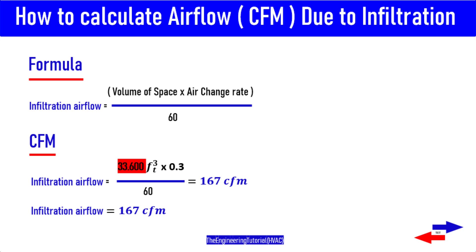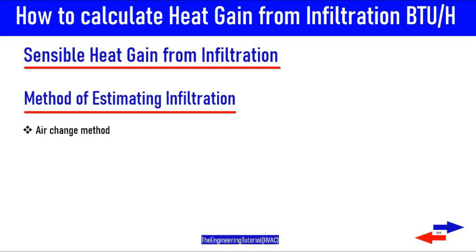In the previous video using the air change method, we estimated the quantity of air infiltrating in a space, which was 167 CFM of airflow. In order to calculate the sensible heat gain due to infiltration in a building — infiltration is an air leakage into or out of a building — heating or cooling requires a significant amount of energy, so energy efficient buildings are designed and built using practices that reduce air leakage to the minimum level acceptable.